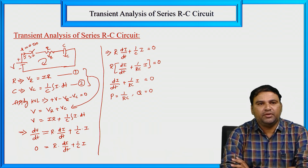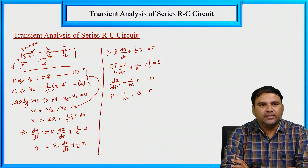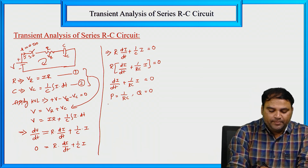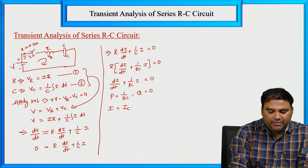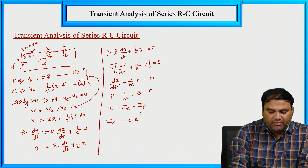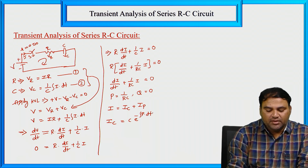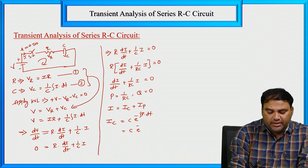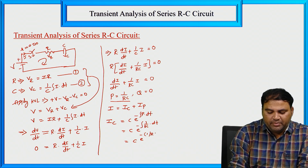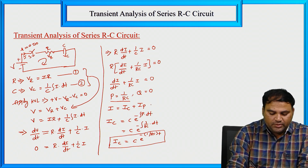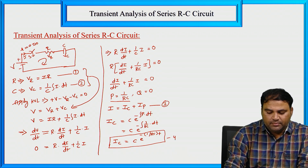Using this equation, we have to calculate the current response of the RC circuit, then voltage drop across the resistor and capacitor. The total current I equals complementary function IC plus particular integral IP. IC equal to C into e to the power of minus integral of P dT. Substituting P equal to 1 by RC: IC equal to C into e to the power of minus 1 by RC into T — this is equation 3.